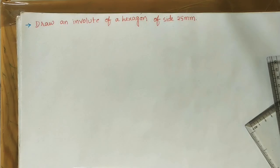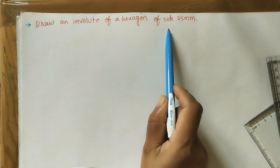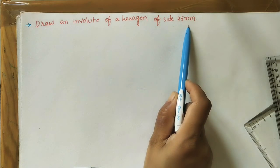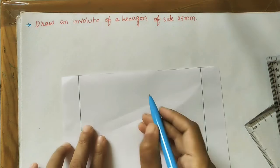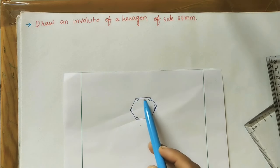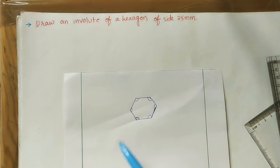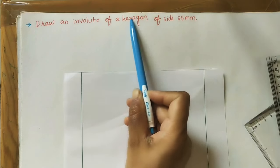Today we will discuss how to draw an involute of a hexagon. The given question is: draw an involute of a hexagon of side 25 mm. The side length is 2.5 centimeters. As we know, a hexagon has six sides, and for any regular polygon all side lengths are the same value and the angles at the corners are also the same.